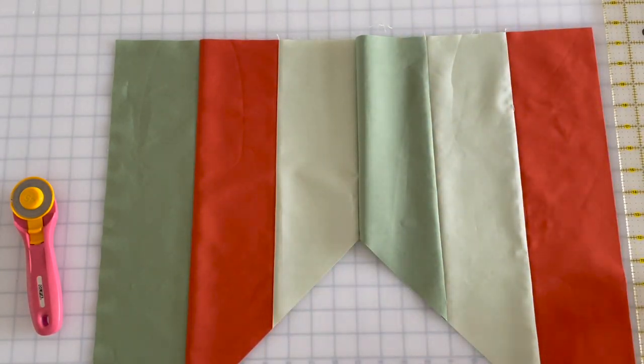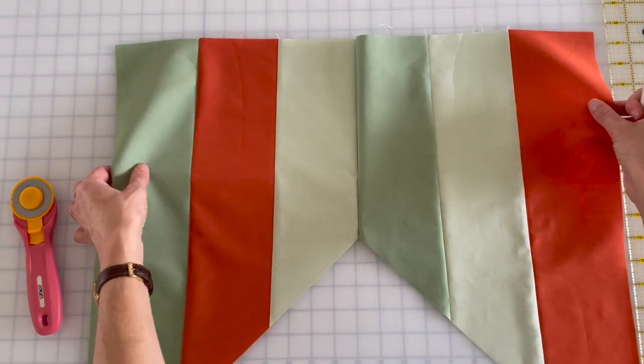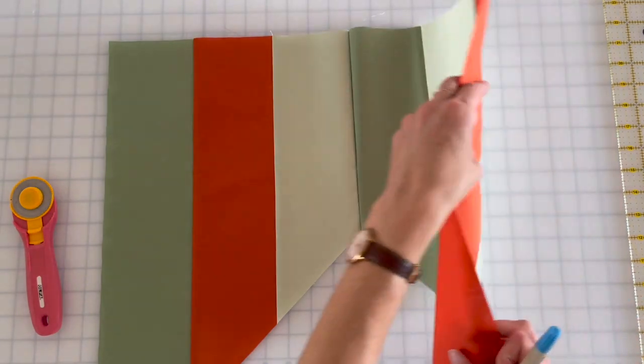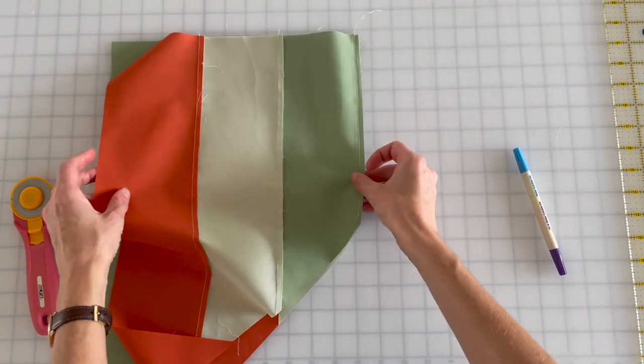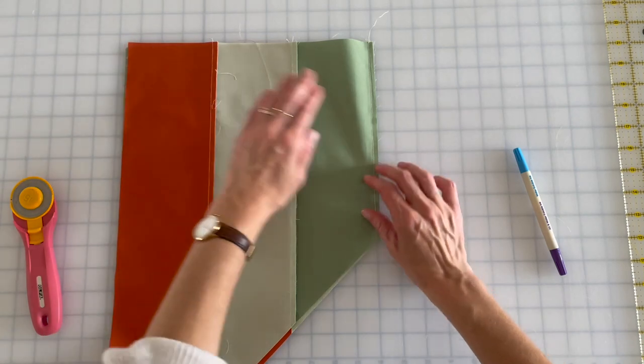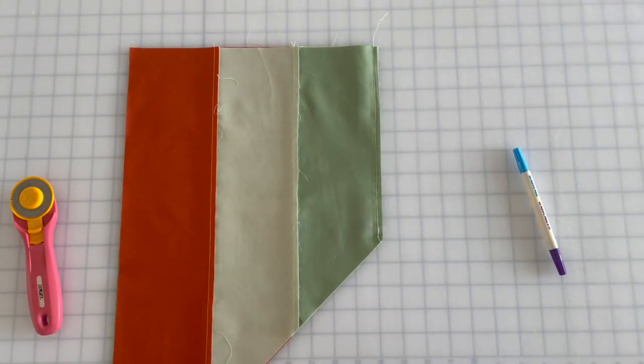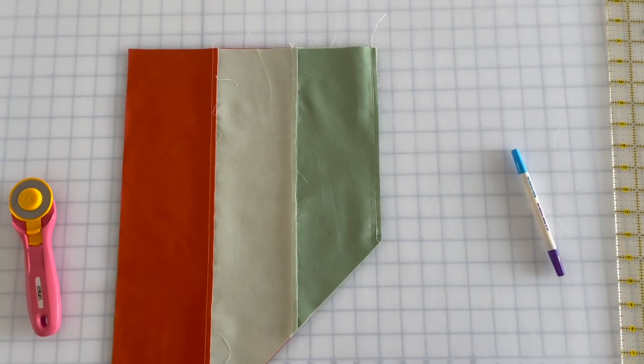Okay, so already I've taken my two 45-degree cut strip units and I have lined them up, the squatty side together, and I marked a quarter inch. I'm going to zoom in so you can see.